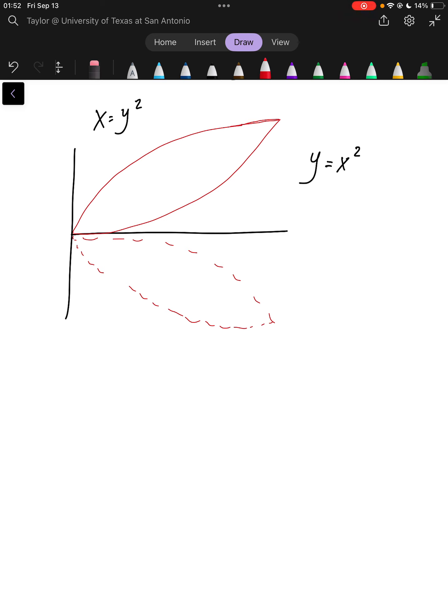We're asked to find the volume of the solid obtained by rotating the region bounded by y equals x squared and x equals y squared about the x-axis.